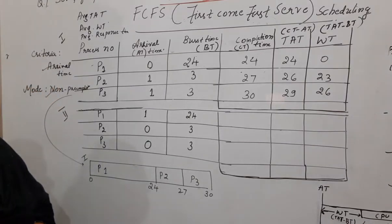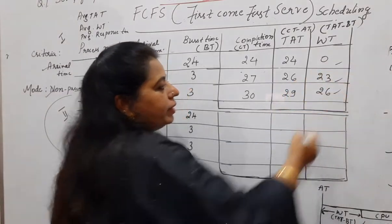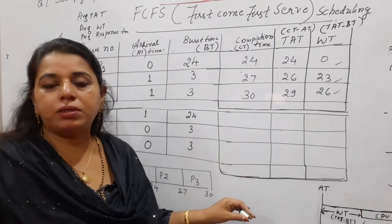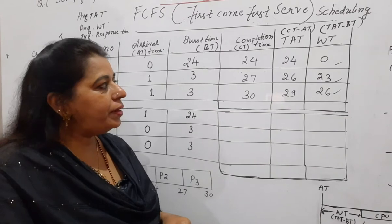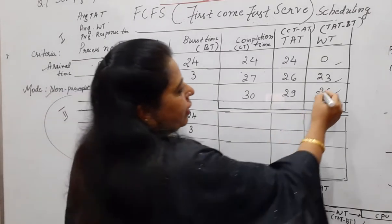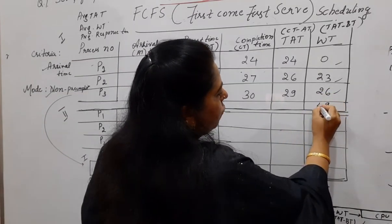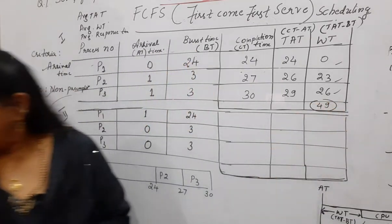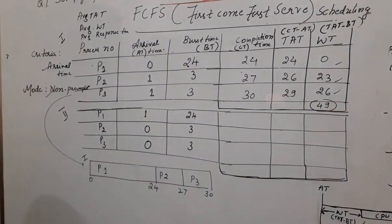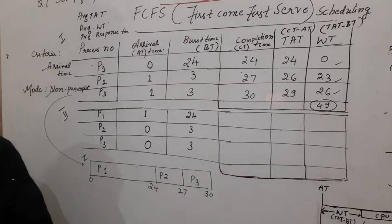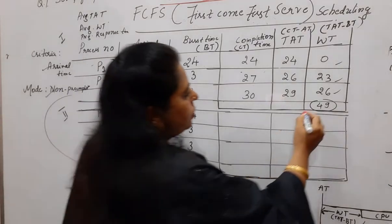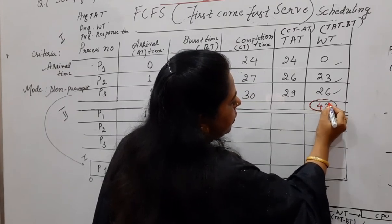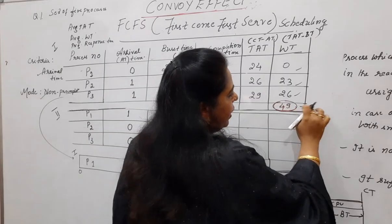So this is the waiting time. Now add these numbers. 23 plus 0 plus 26. Because you are asked to find out the average waiting time in both these examples. You have completed the first one. Now add these values. It will be 49. 49 is the total. Let me just write it here.